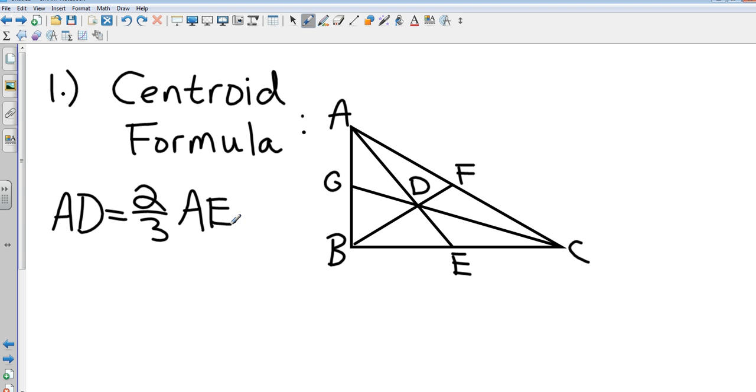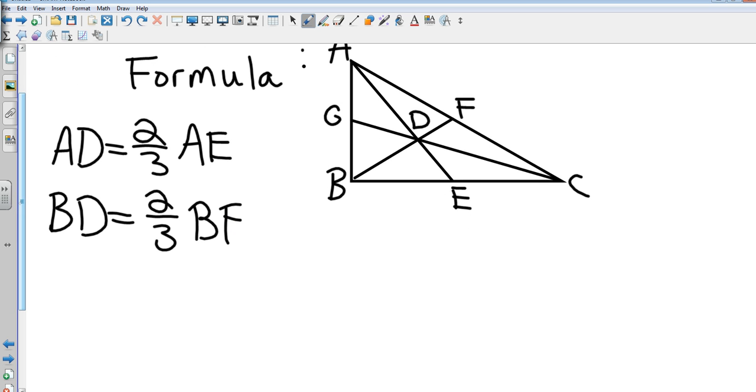What would BF be? Using BF, tell me the centroid formula. BD is two-thirds of BF. I agree with that. And give me the last one, CG. CD is two-thirds of CG, okay.